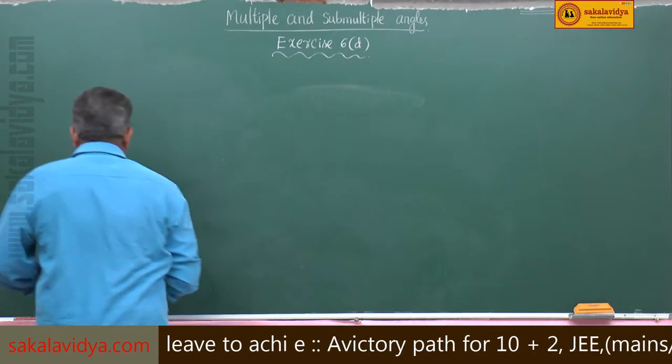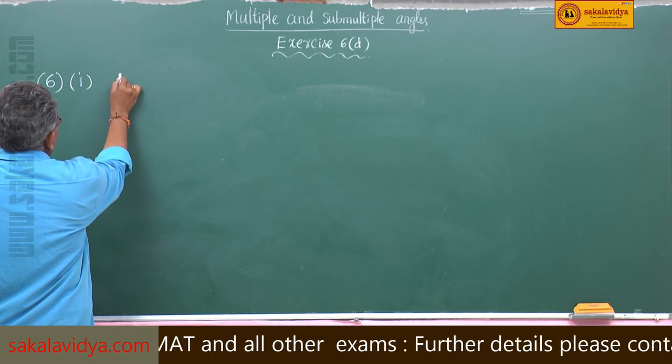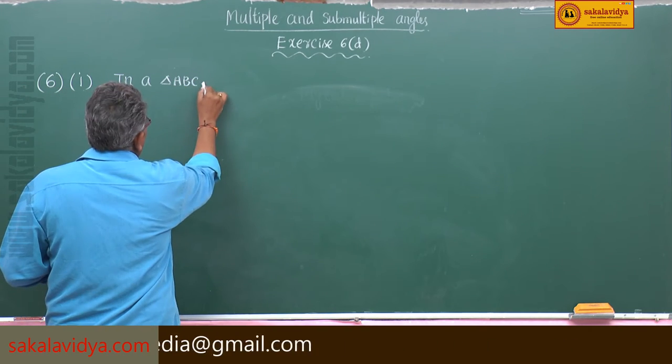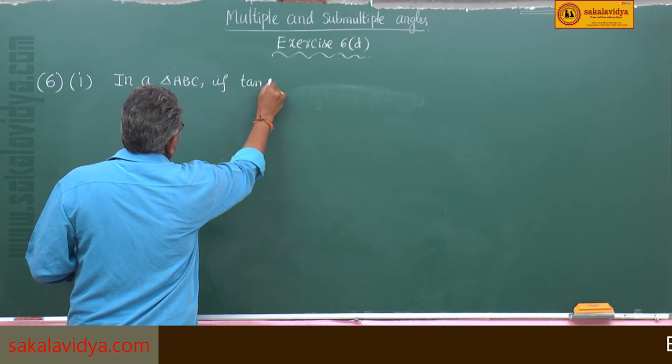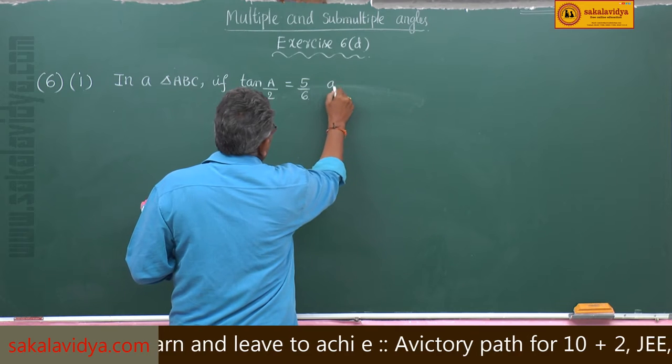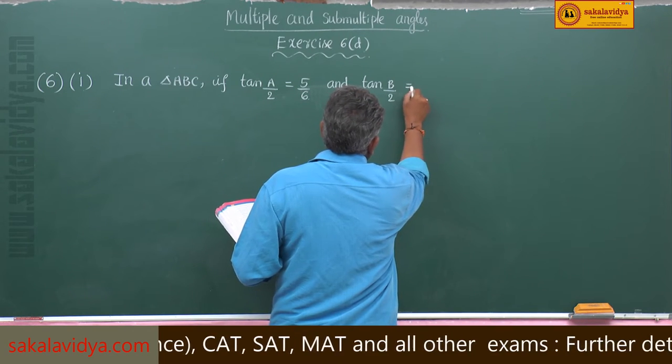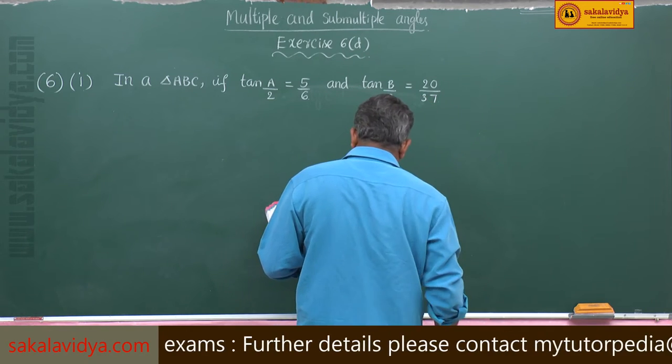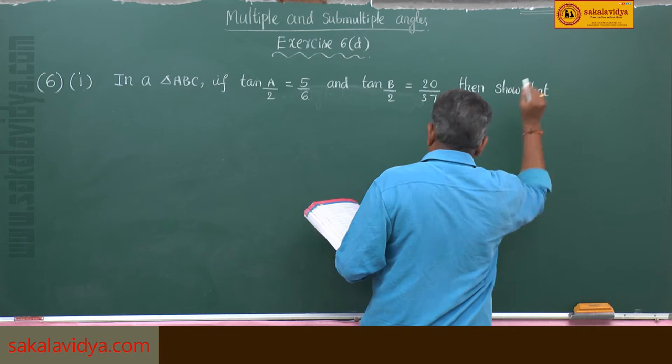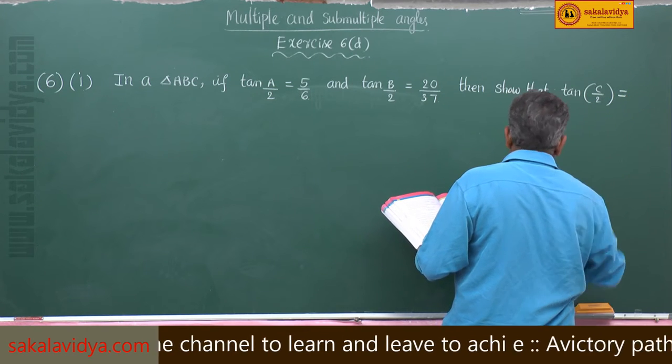Let us move to the next problem, sixth first one. In a triangle ABC, if tan A by 2 is equal to 5 by 6 and tan B by 2 is equal to 20 by 37, then show that tan of C by 2 is equal to 2 by 5.